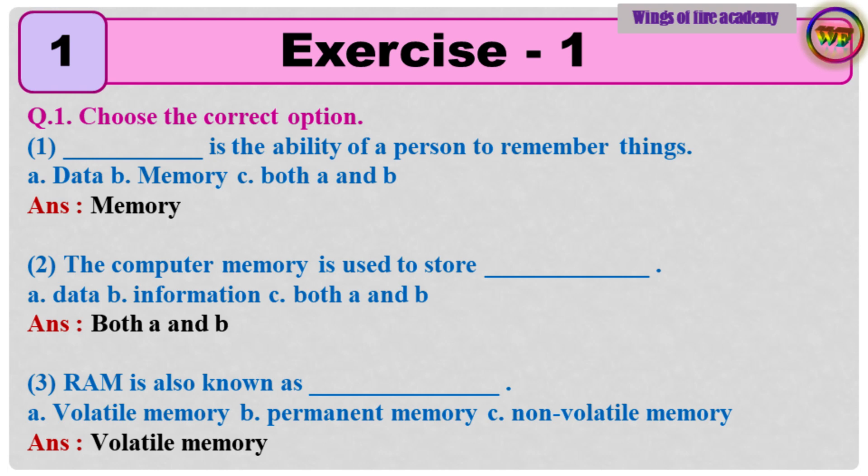Question 2: The computer memory is used to store dash. A. Data, B. Information, C. Both A and B. Answer: Both A and B. Question 3: RAM is also known as dash. A. Volatile memory, B. Permanent memory, C. Non-volatile memory. Answer: Volatile memory.